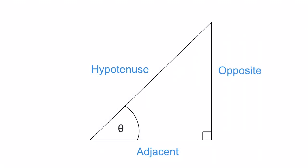Now that's all based on the fact that this theta or this designated angle is sitting here. But what if we moved it up to this side here? Would that change things? 100% yes. Now the hypotenuse is always going to be the hypotenuse because it's the longest side, so that didn't change. But this side and this side are going to change names.